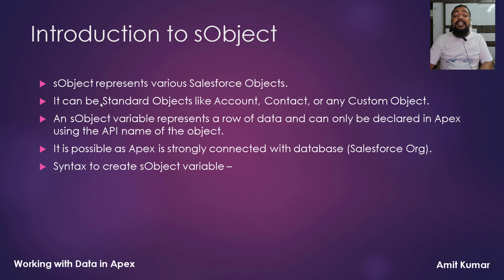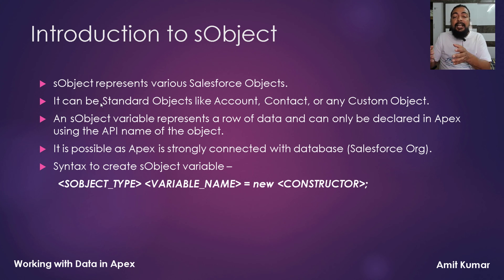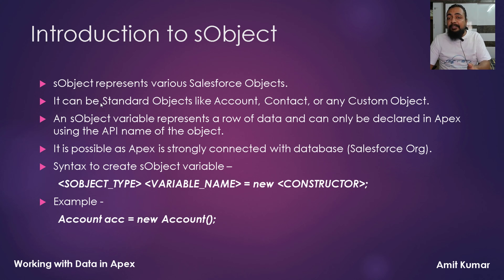The syntax to create an S-Object variable is: specify the S-Object type, then a space, then the name of the variable, then the equals sign, then the new operator, and then the constructor. The constructor here will depend on the S-Object itself. For example, if I want to create a variable for the Account Salesforce object in Apex, I can write: Account ACC = new Account().